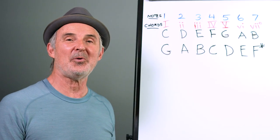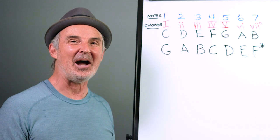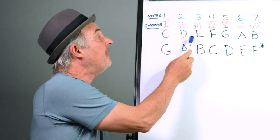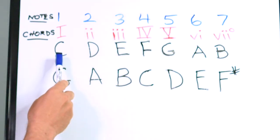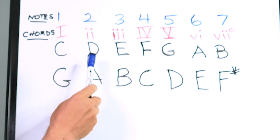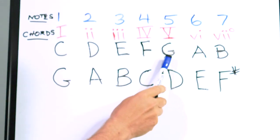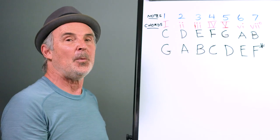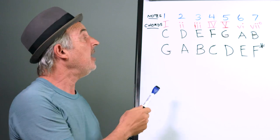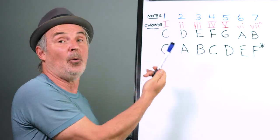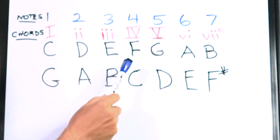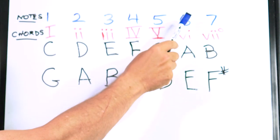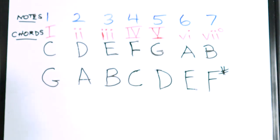Welcome to my music theory studio. Let's start out by talking about a major scale. I've written down the notes of the C major scale here. It starts with C and goes up the alphabet: D, E, F, G, A, B, and then starts over at C. We can number each of those notes in relationship to the scale — the first one being 1, 2 is D, 3 is E, 4 is F, 5 is G, A is 6, and B is 7.